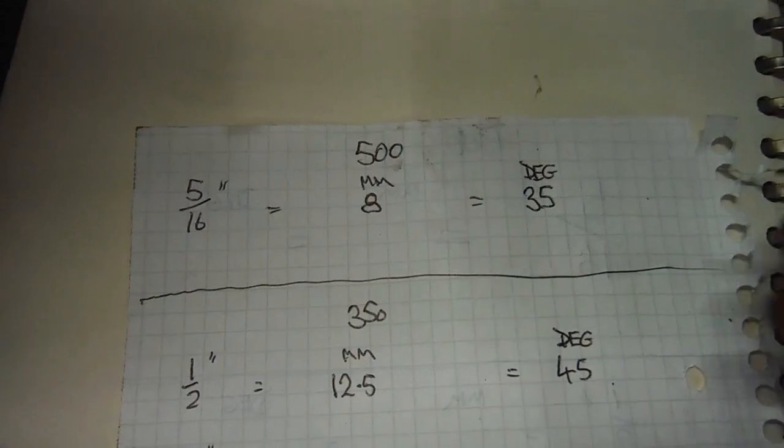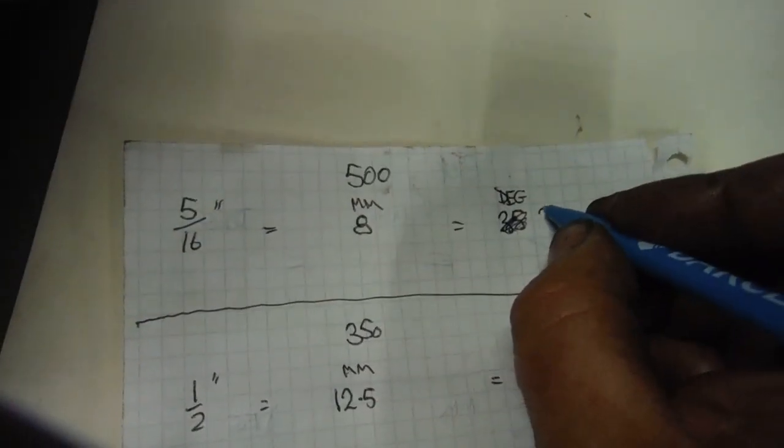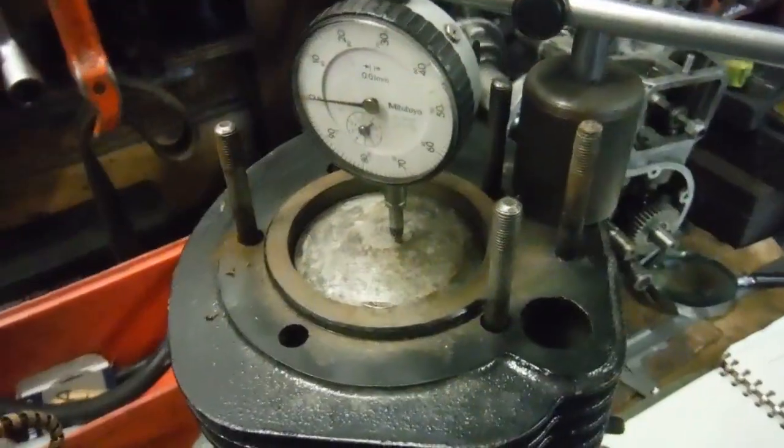So there we are, I will amend that for what it's worth. Eight millimeters before top dead center is 33 degrees for the 500, and we've got those figures there.